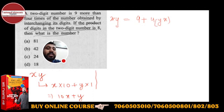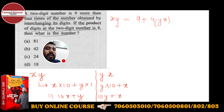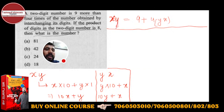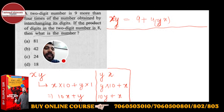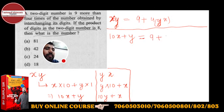We don't solve xy by writing it as a product. If the original number is xy written as 10x + y, then the interchanged number yx is written as 10y + x. So the equation becomes: 10x + y = 9 + 4(10y + x).